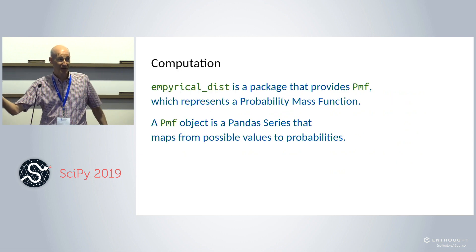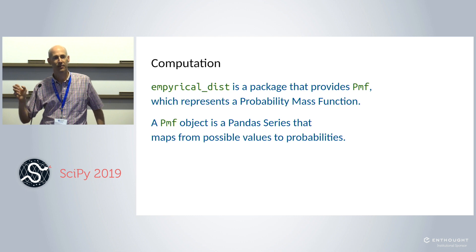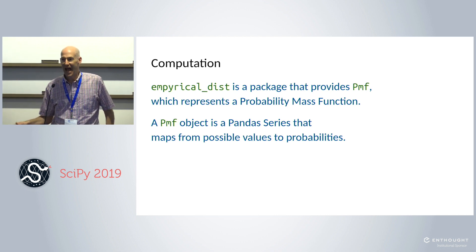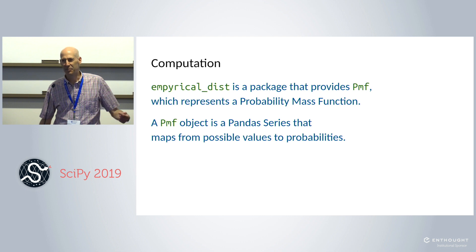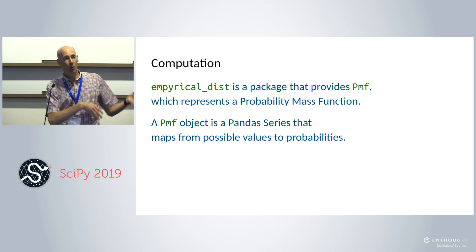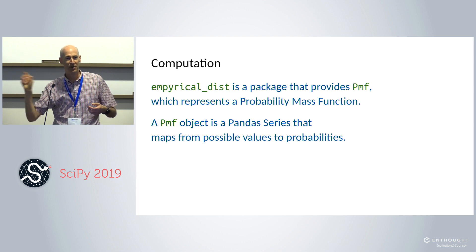The third way to solve this problem is using a computational library called Empirical Distributions. I wrote this library — it's small. We're going to use a class called PMF, which stands for probability mass function. Here's a secret: a PMF is actually just a Pandas Series. If you know Pandas, you know this library already. It provides a few features specific to probability mass functions, but it's basically a map from possible outcomes to their probabilities.